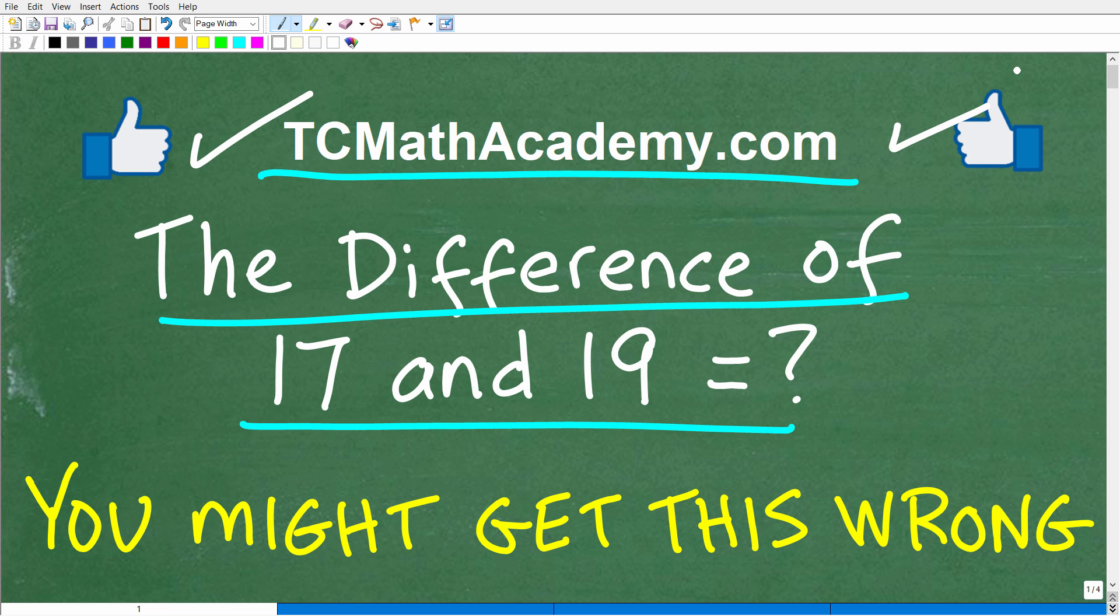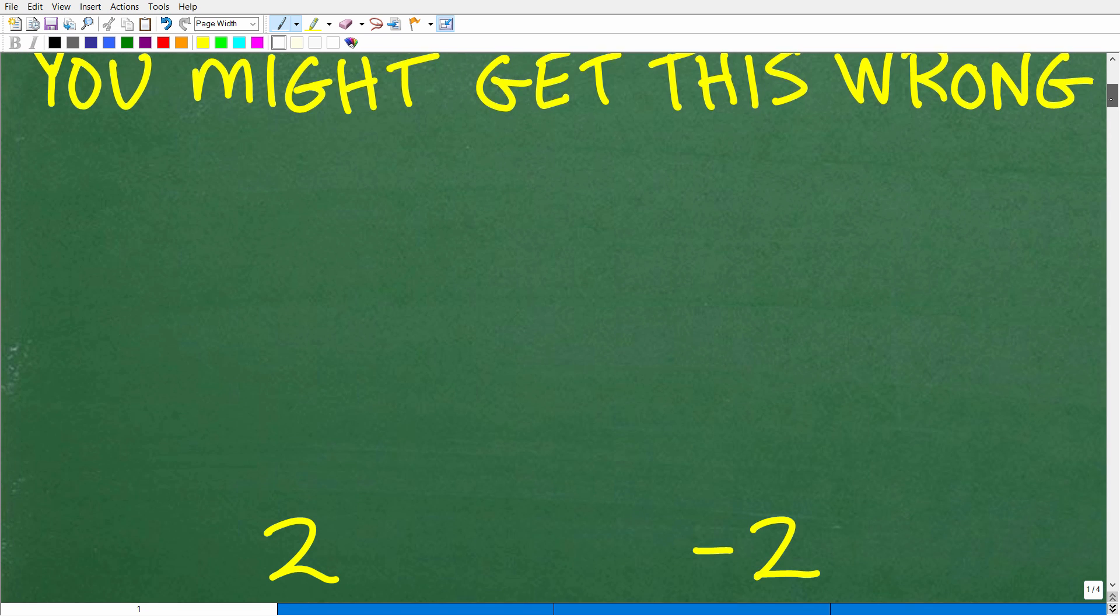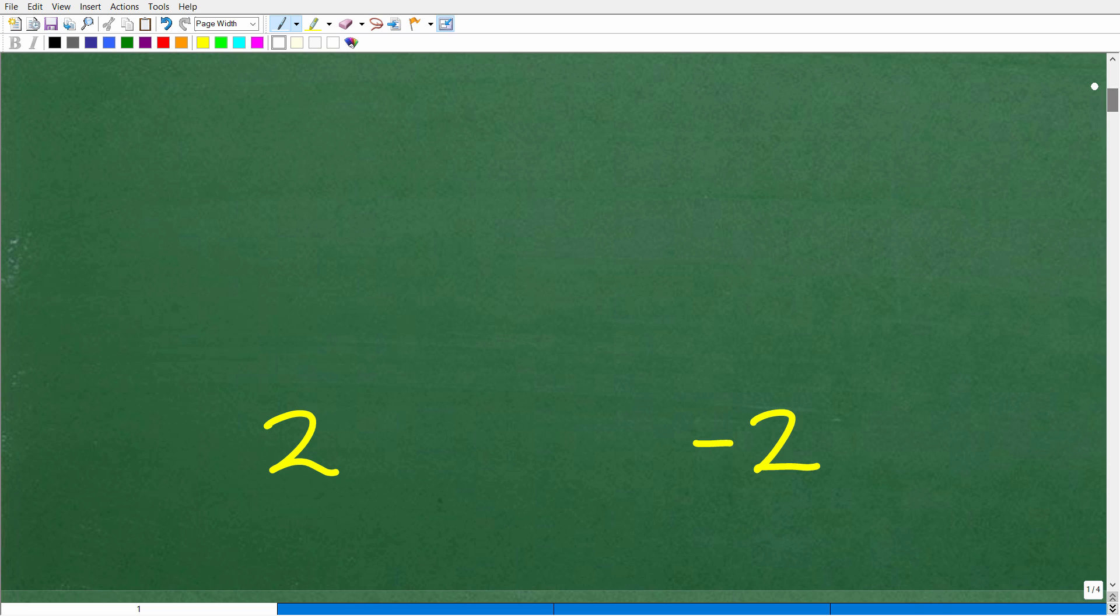Okay, so pretty straightforward question here. The difference of 17 and 19 is equal to, well, the most common answers are going to be one of these numbers right here. Now somebody got a nice little happy face and an A plus, so who is that?